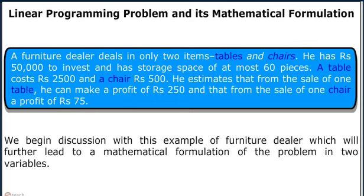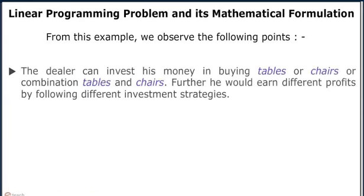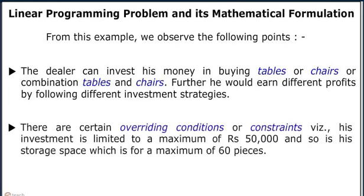We begin discussion with this example of a furniture dealer, which will further lead to the mathematical formulation of problems in two variables. For this example, we observe the following points. The dealer can invest his money in buying tables, chairs, or a combination of them. He would earn different profits by following different investment strategies. There are certain overriding conditions or constraints: his investment is limited to a maximum of Rs 50,000, and his storage space is for a maximum of 60 pieces.